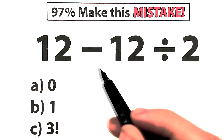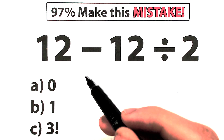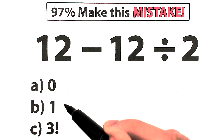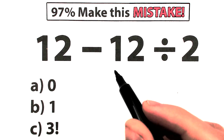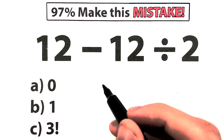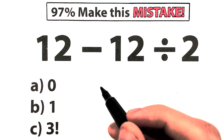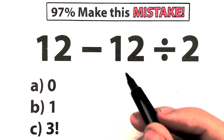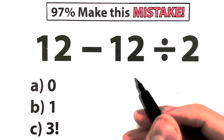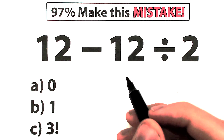Go ahead and put your answer down into the comment section. We have three options: A, B, and C — so choose one option, what do you think is correct, and write your option down into the comment section. It will be really interesting to check the answers at the end of the video.